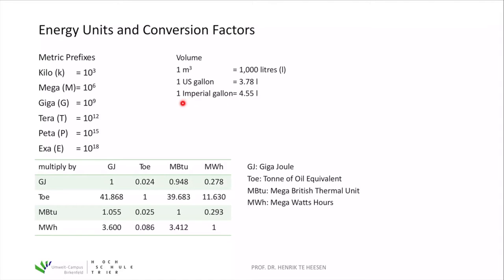For temperature, we use kelvin as the physical unit, but degrees Celsius is also common; the United States uses degrees Fahrenheit. You need to be able to convert between different energy units. At the bottom of the slide there is a table with four different energy units. The SI unit joule is the energy unit we should always use — work done equals force times distance, giving the unit joule.